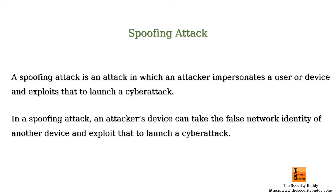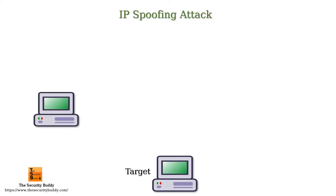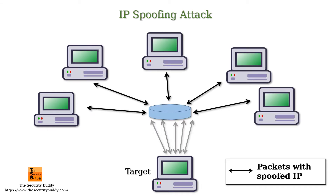There are different types of spoofing attacks. In an IP spoofing attack, an attacker changes the source IP address of a network packet and sends the network packet to a target host. If the target host cannot understand the deception, it will assume the network packet has come from the falsified IP address.